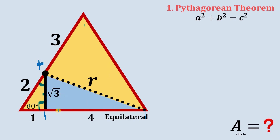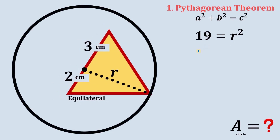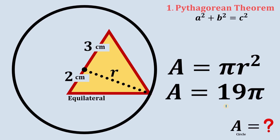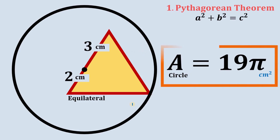Let's focus on this right triangle and use the Pythagorean theorem. We have (√3)² + 4² = r². Simplifying: 3 + 16 = r², which gives us r² = 19. Since the area of a circle is πr² and r² = 19, the area of this circle is simply 19π square centimeters. Using the Pythagorean theorem, the area of the circle is 19π square centimeters.